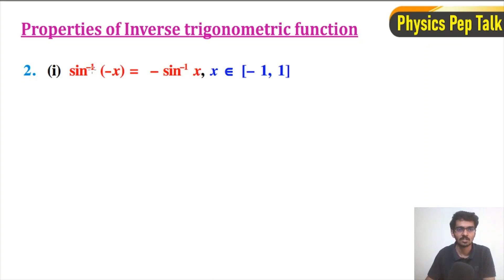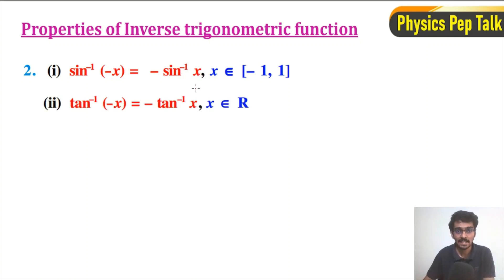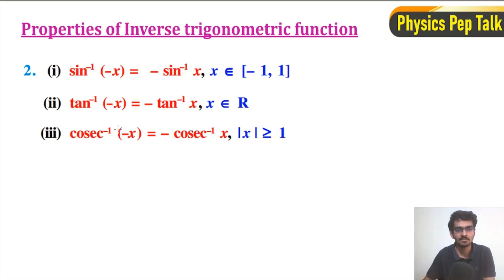First, sin inverse of minus x is equal to minus sin inverse of x, for x belonging to the closed interval minus 1, 1. Second, tan inverse of minus x is equal to minus tan inverse of x, for x belonging to the set of real numbers. Third, cosec inverse of minus x is equal to minus cosec inverse of x, for mod x greater than or equal to 1.